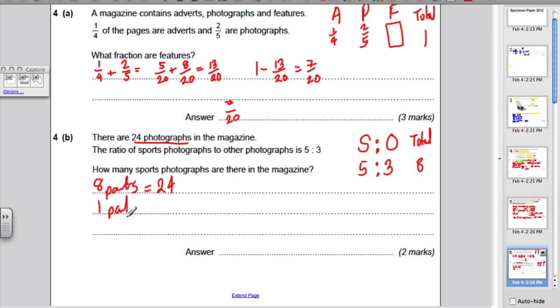So, 1 part is 24 divided by 8, which is 3 photos. And the sports are 5 parts, so 5 parts is 5 times 3, which is 15 photos. So, the answer for this is simply 15.